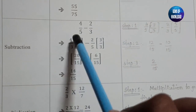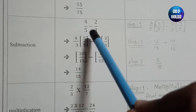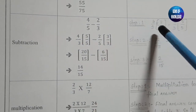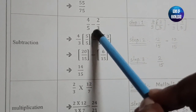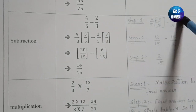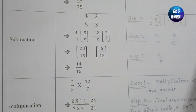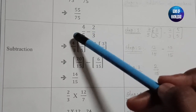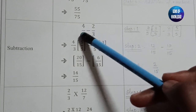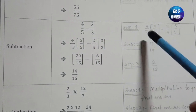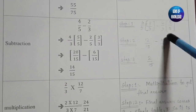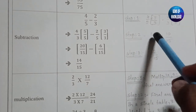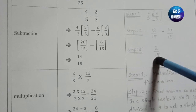For subtraction, 4/5 − 2/3: multiply 4/5 by 3/3 and 2/3 by 5/5. This gives 12/15 − 10/15. Subtract the numerators: 12 − 10 = 2, with the denominator remaining 15, so the answer is 2/15.